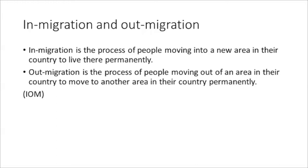What about in-migration and out-migration? In-migration and out-migration refer to the process of people moving from one area to another within their own country. In-migration is the process of people moving into a new area in their country to live there permanently. Out-migration is the process of people moving out of an area in their country to move to another area in their country permanently.